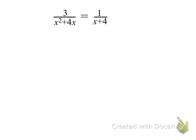There's a couple different ways we could do these. In this first example, I'm going to go through both ways to do it. The first thing you can do is, if you notice that you have a fraction equal to a fraction, this is basically like a ratio is set up, and we can just cross multiply. So 3 times the x plus 4 equals 1 times the x squared plus 4x.